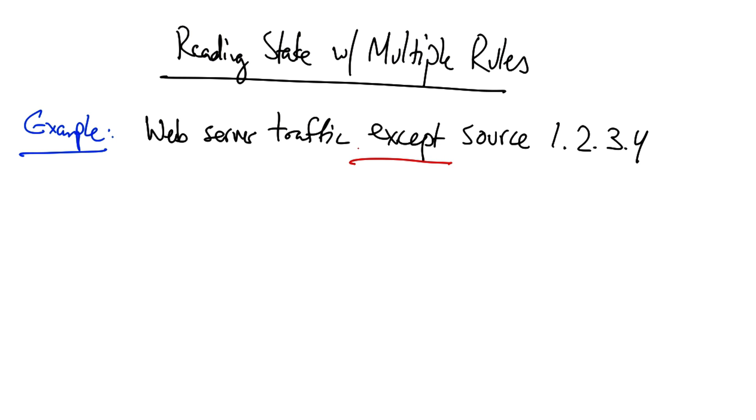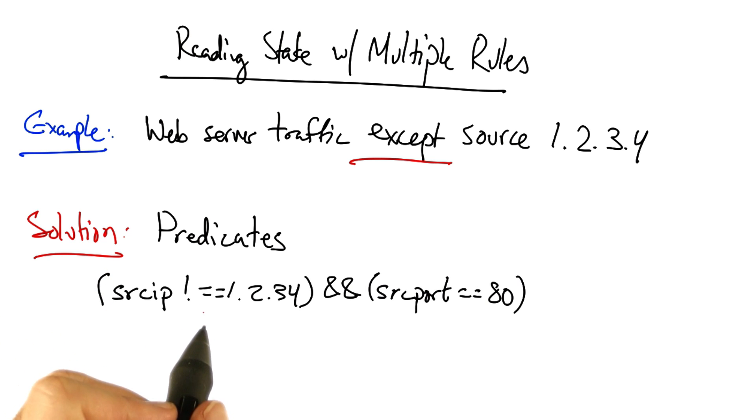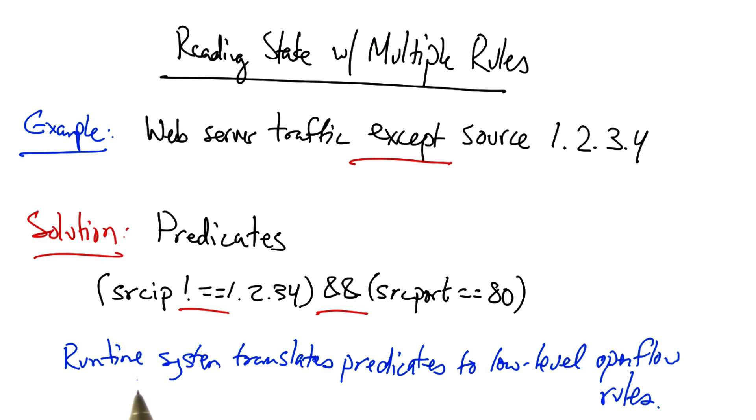Simple match action rules do not allow us to express such exceptions. As a solution to this problem, we need a language primitive that allows us to express predicates. Here is a simple statement that has several predicates, such as and, and not. A runtime system can then translate these predicates into low-level OpenFlow rules, ensuring that they are installed atomically and in the right order.